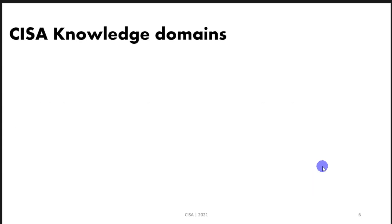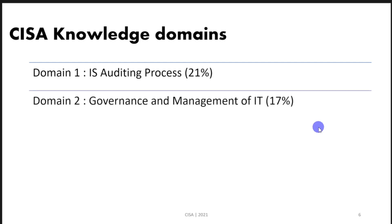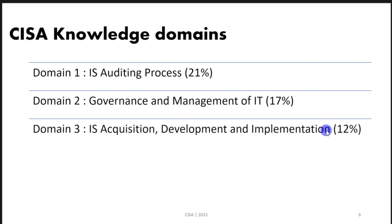The CISA certification consists of five main knowledge domains. Domain 1 covers the IS auditing process — how to plan and execute an audit — and represents 21% of exam questions. Domain 2 covers governance and management of IT, including the board of directors, internal operations auditing, governance structure, strategy, and business objectives. Domain 3 covers IS acquisition, development, and implementation, including project management and software project types, and represents 12% of exam questions.